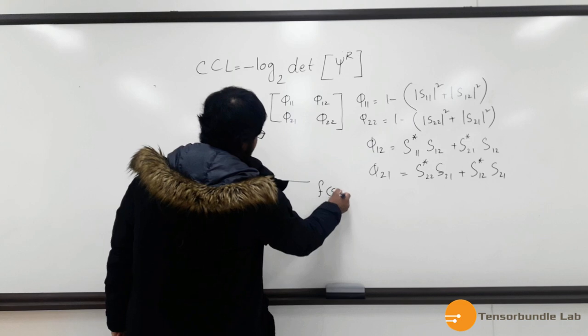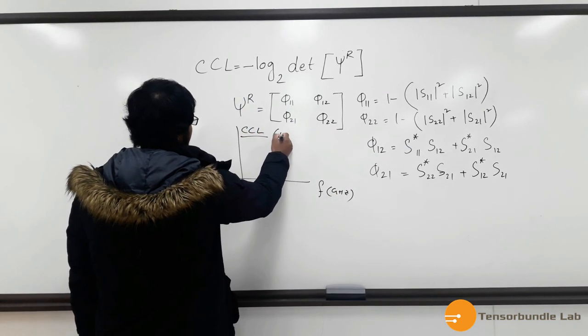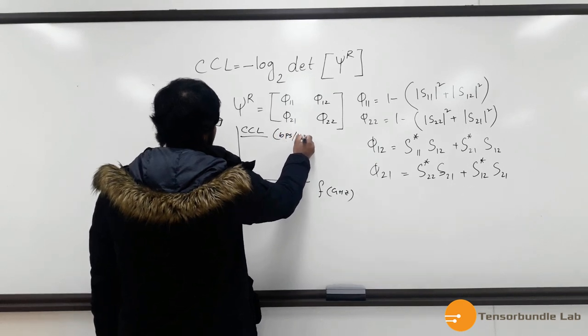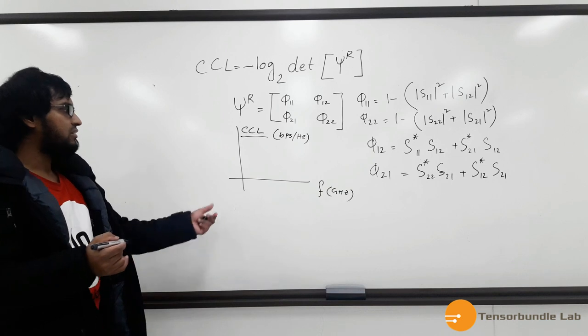You can just simply plug in the values from these equations in this matrix and take the determinant and take the log of 2, and you will have a plot like this. It's a frequency axis. And then you can plot CCL in terms of BPS per hertz. You can plot it in MATLAB.